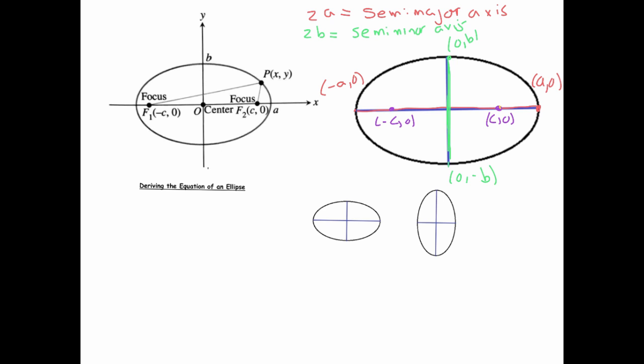This distance here, note that the vertex (a, 0) is on the ellipse, can be expressed as a minus c, and this distance can be expressed as a plus c. So the sum of those two distances must be that constant sum, which is a minus c plus a plus c, which equals 2a.